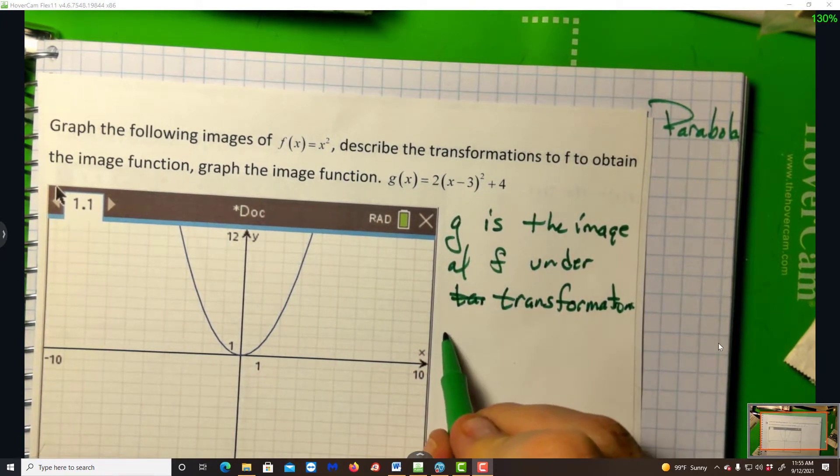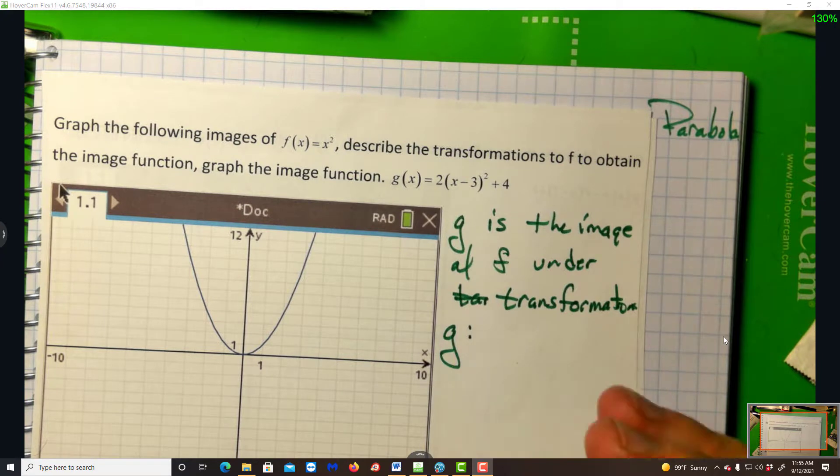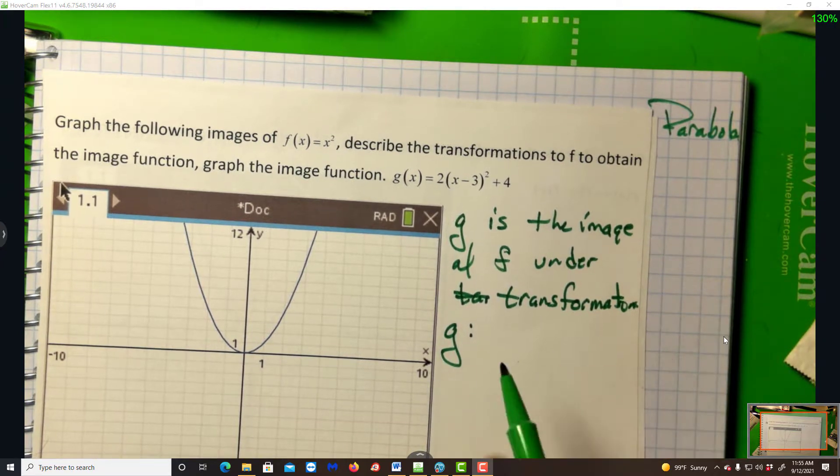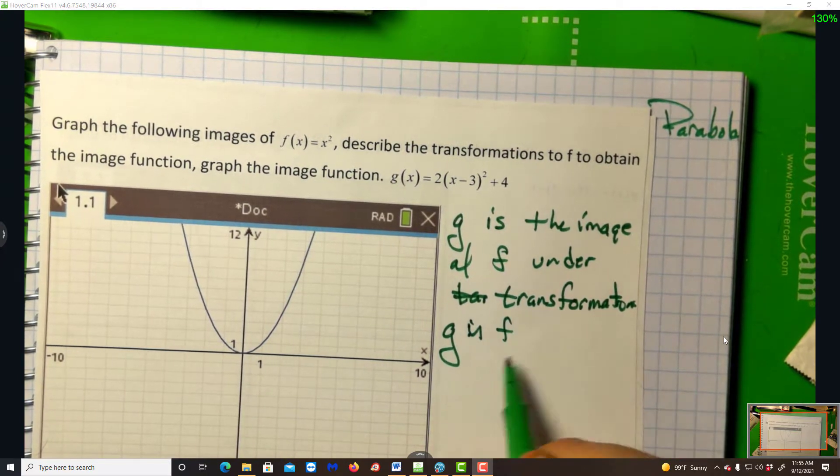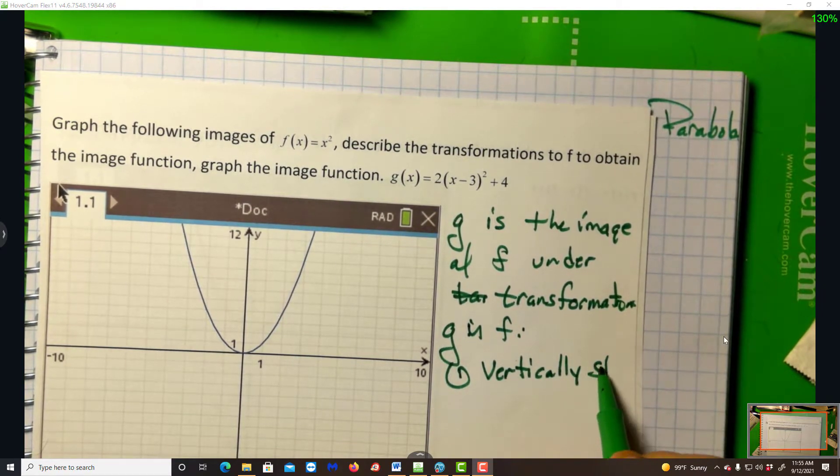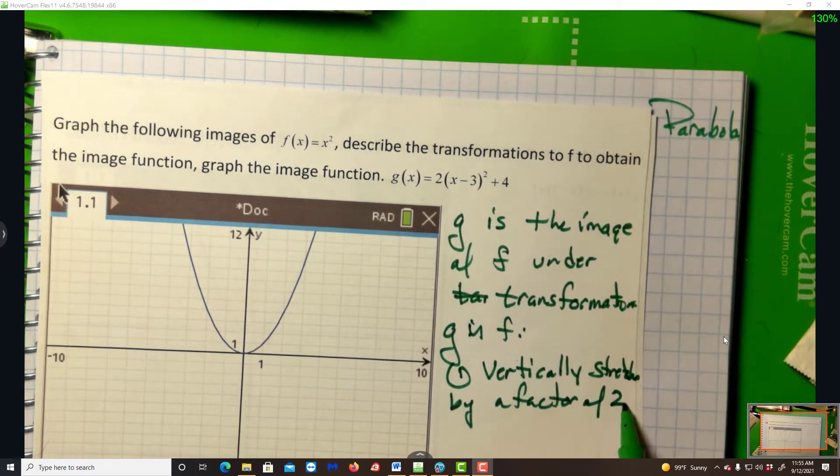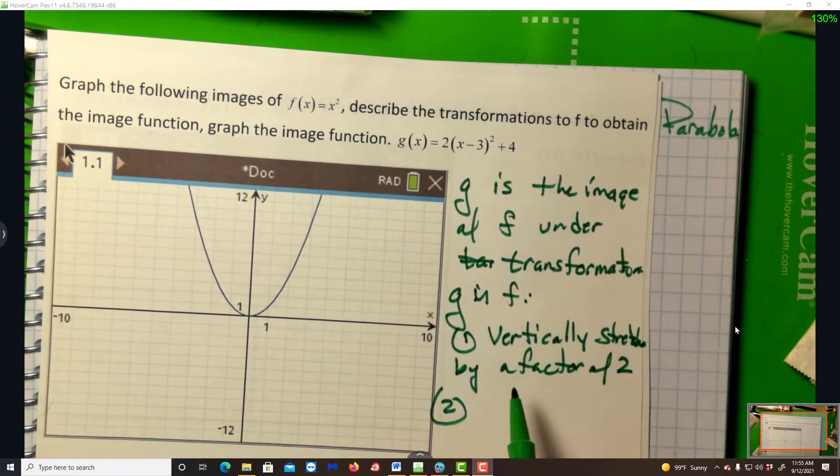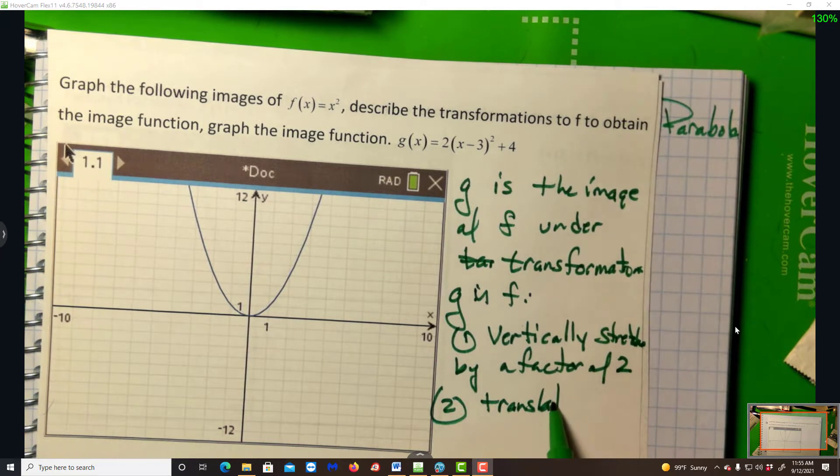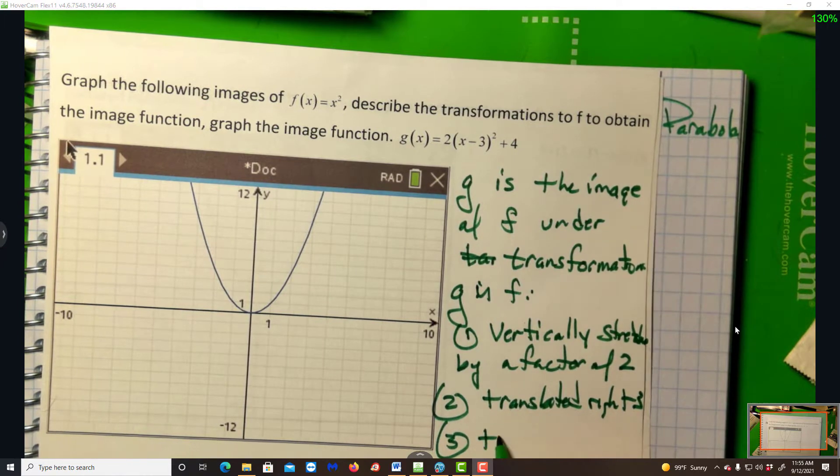We learned that there are two sets of transformations. If you think of the order you do them in, you relate that to order of operations. Multiplication comes before addition, so reflections and dilations come before translations. So g is f, vertically stretched by a factor of 2, translated right 3, and then translated up 4.